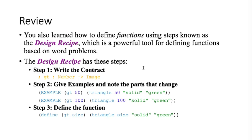The design recipe has these steps: writing the contract, which gives the name, the data types of the input — the domain of the function — and the data type of the output, which is the range. Step two is to give multiple examples that show how your function is going to be used. Then you define the function by noticing what changes between examples — for instance, the number that represents the size of the triangle — and making a variable called 'size' to use in the function definition.